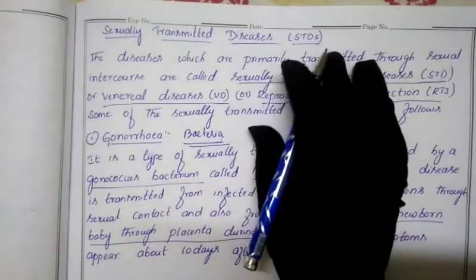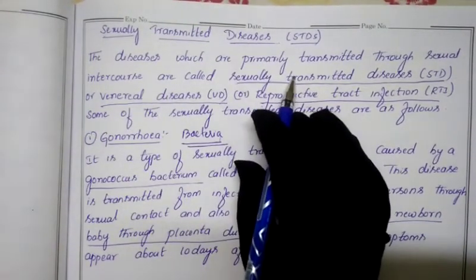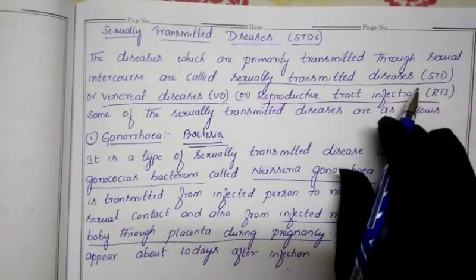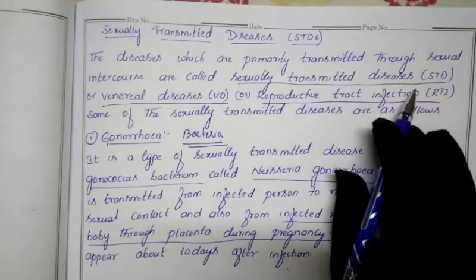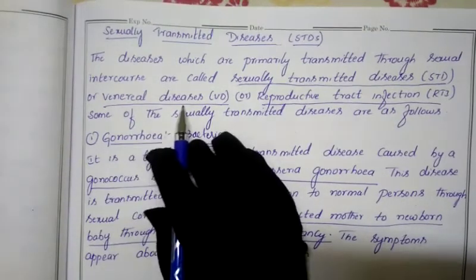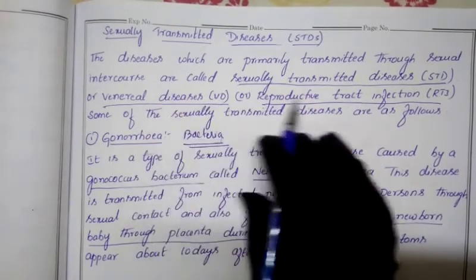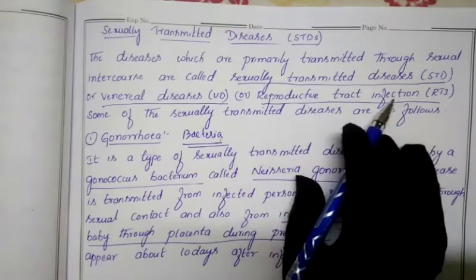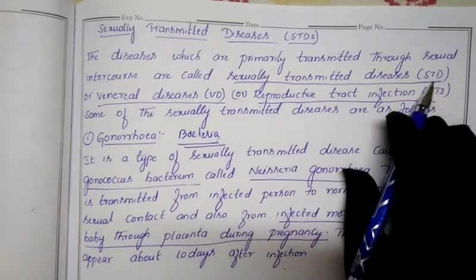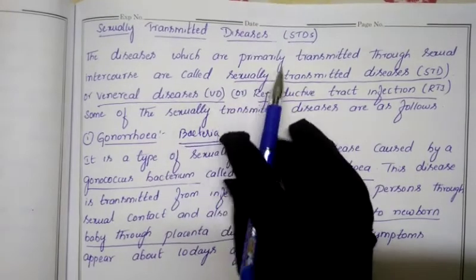Today's class covers sexually transmitted diseases, or STDs. A sexually transmitted disease is a disease primarily transmitted through sexual intercourse. STDs are also called venereal disease (VD) or reproductive tract infection (RTI). These are the different names for sexually transmitted diseases.